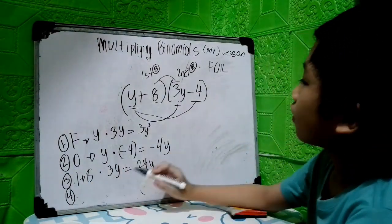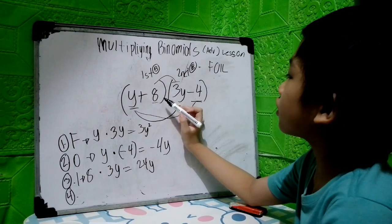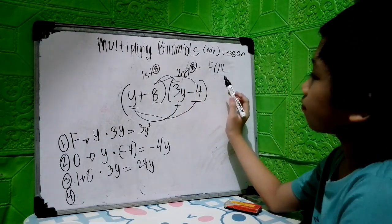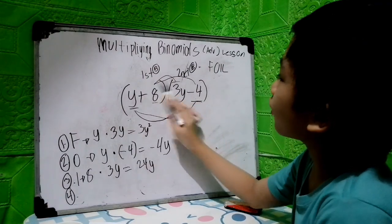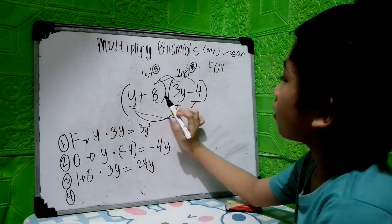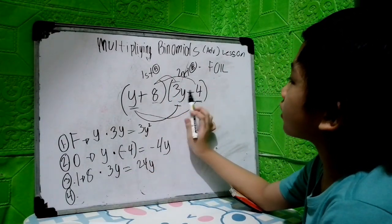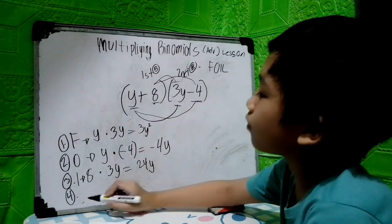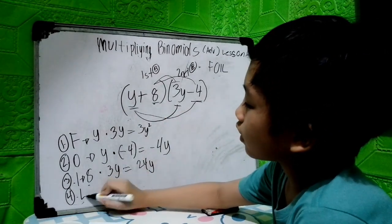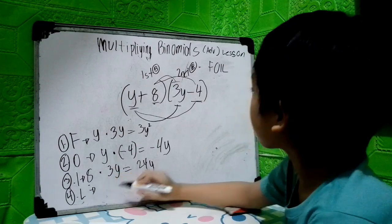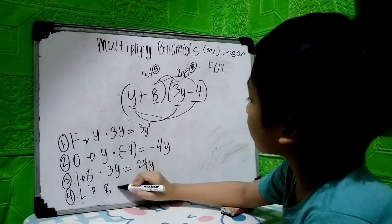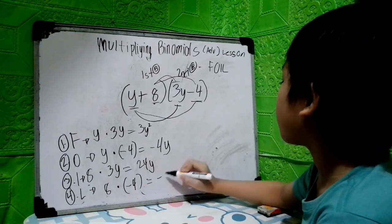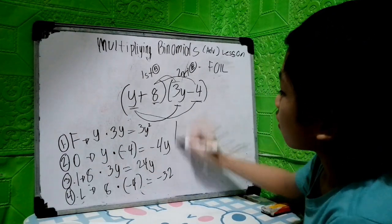The fourth step: get the outer term and multiply it as well as the outer term in the first and second binomial. Our outer term in the first binomial, which is 8, and then negative 4. This is L. 8 times negative 4 equals negative 32.